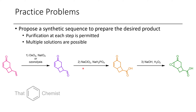Once we have this aldehyde, we could do a Pinnick oxidation using sodium chlorite in the presence of a weak acid, which would afford us this carboxylic acid. Finally, we could treat it with basic hydrogen peroxide, and that would do the 1,2-addition to this position. Now, you might have considered doing the hydrogen peroxide/sodium hydroxide step first; however, I would be concerned that if you had an epoxide present, it might actually react with the sodium periodate and cleave the same way a 1,2-diol does.